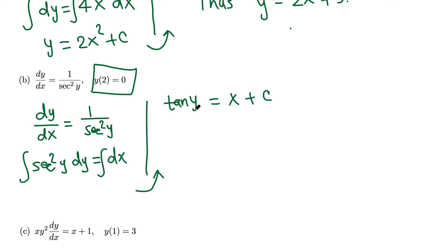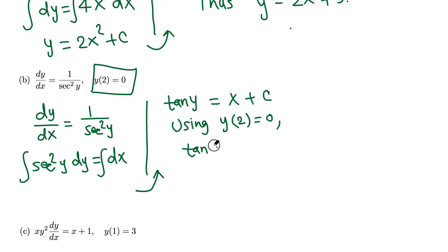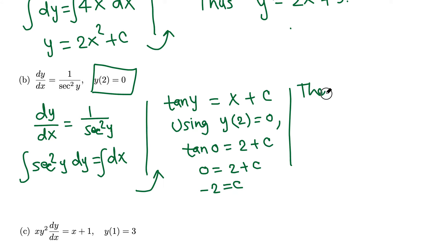To isolate y we'd take the tangent inverse of both sides. Using y(2) equals 0 — that is, y is 0 when x equals 2 — we plug in: tangent of 0 equals 2 plus c. Since tangent of 0 is 0, we get 0 equals 2 plus c, so subtracting 2 gives c equals negative 2.